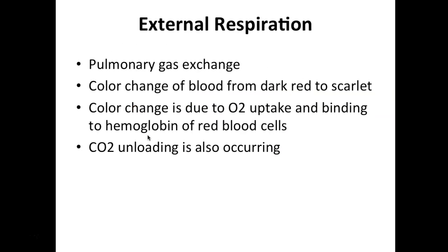External respiration, or pulmonary gas exchange, is where color changes in red blood cells happen in the lungs. Red blood cells low in oxygen travel to the capillaries of the lungs, pick up oxygen, become scarlet red, and are then ready to travel to various organs and tissues to deliver oxygen. Carbon dioxide unloading also happens here — blood releases carbon dioxide into the alveoli so it can be exhaled.